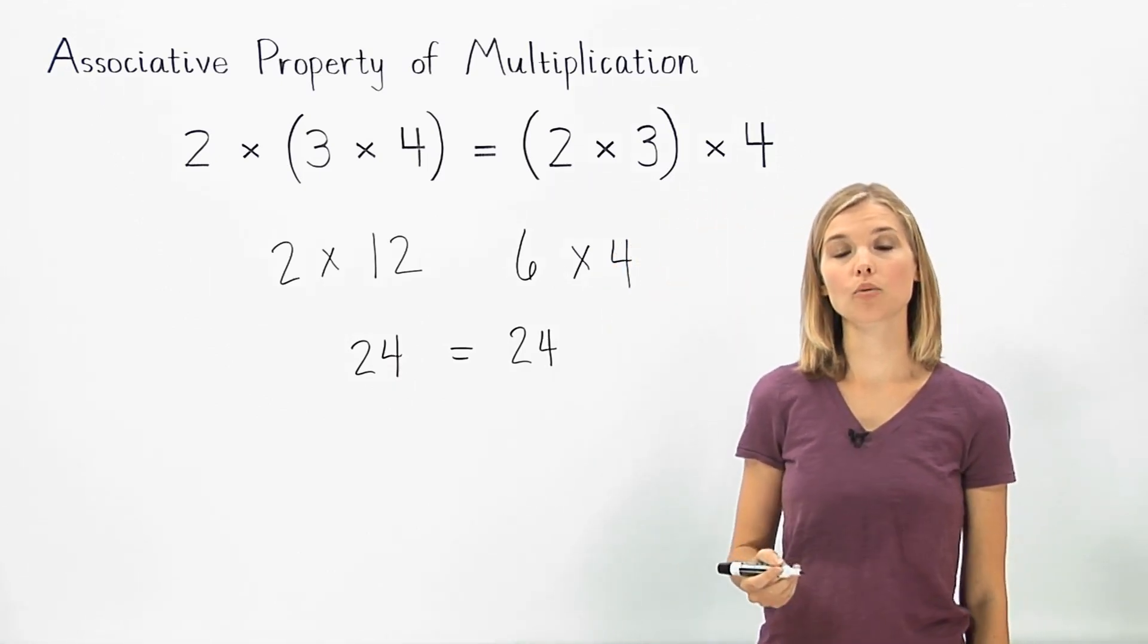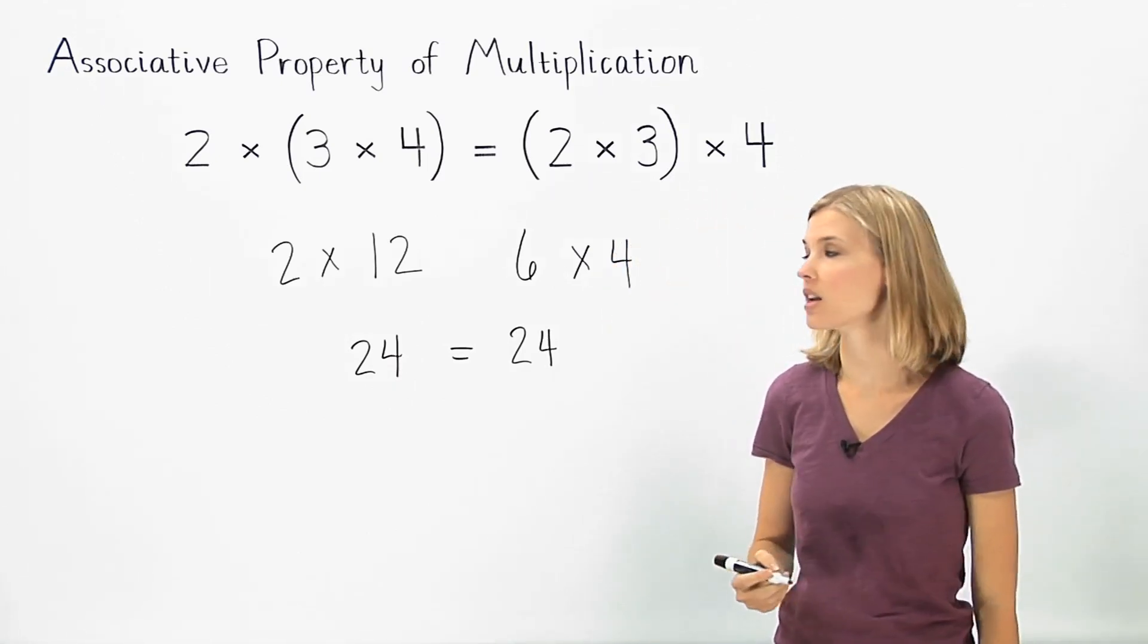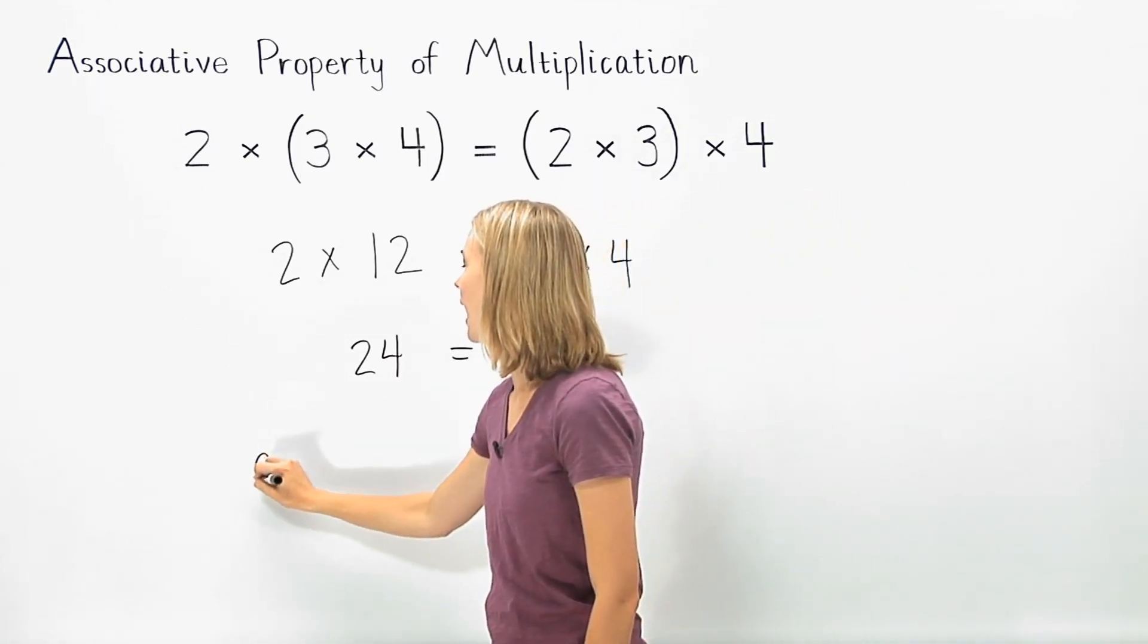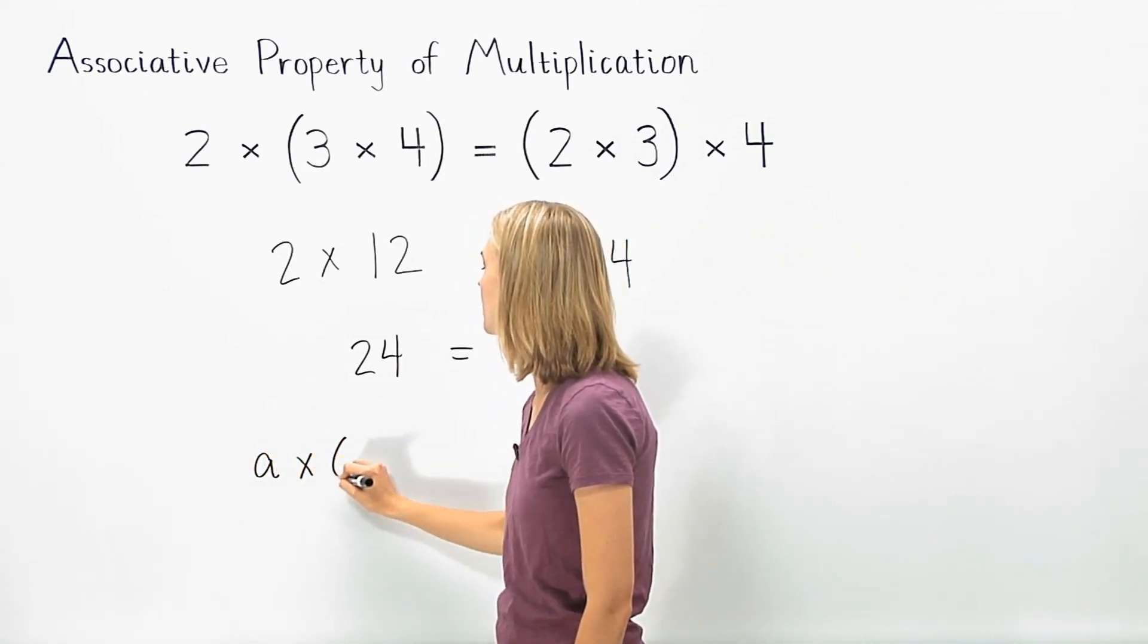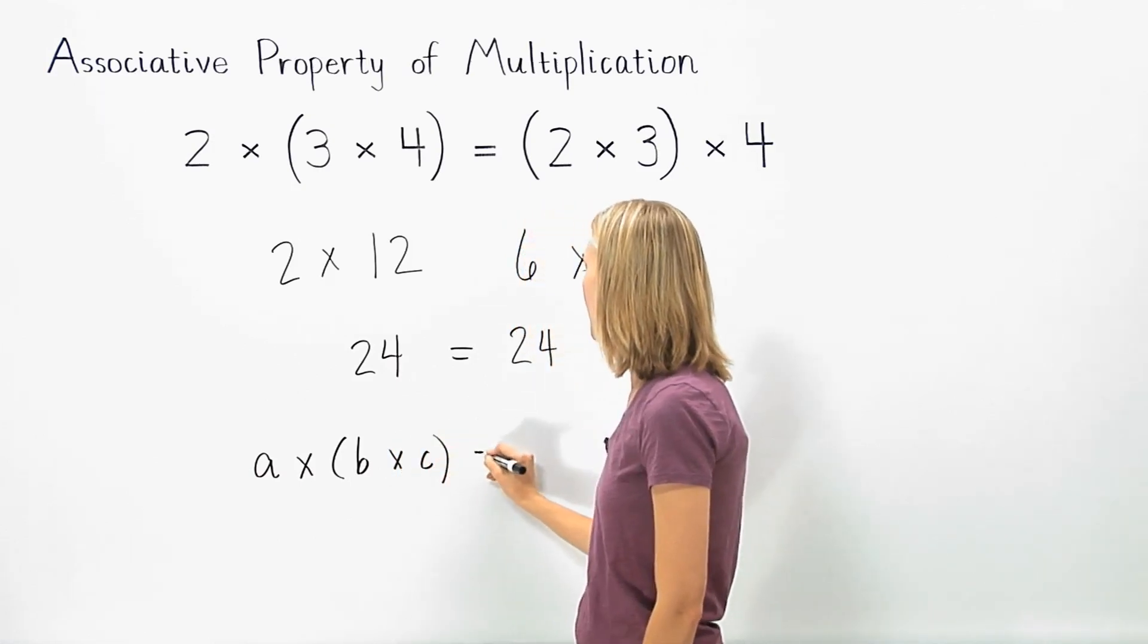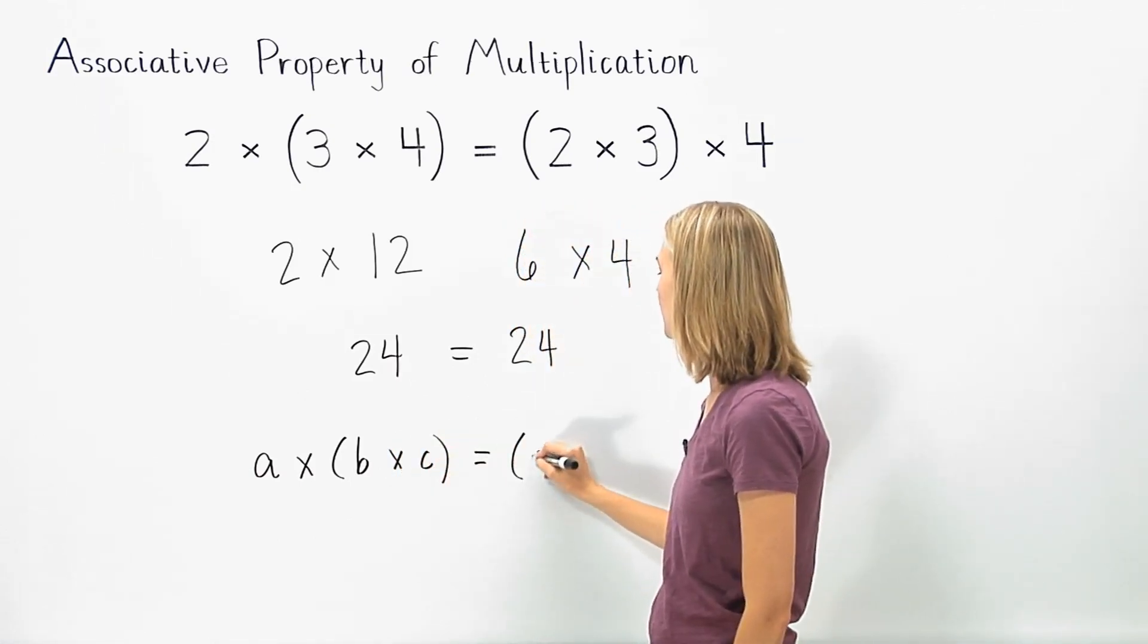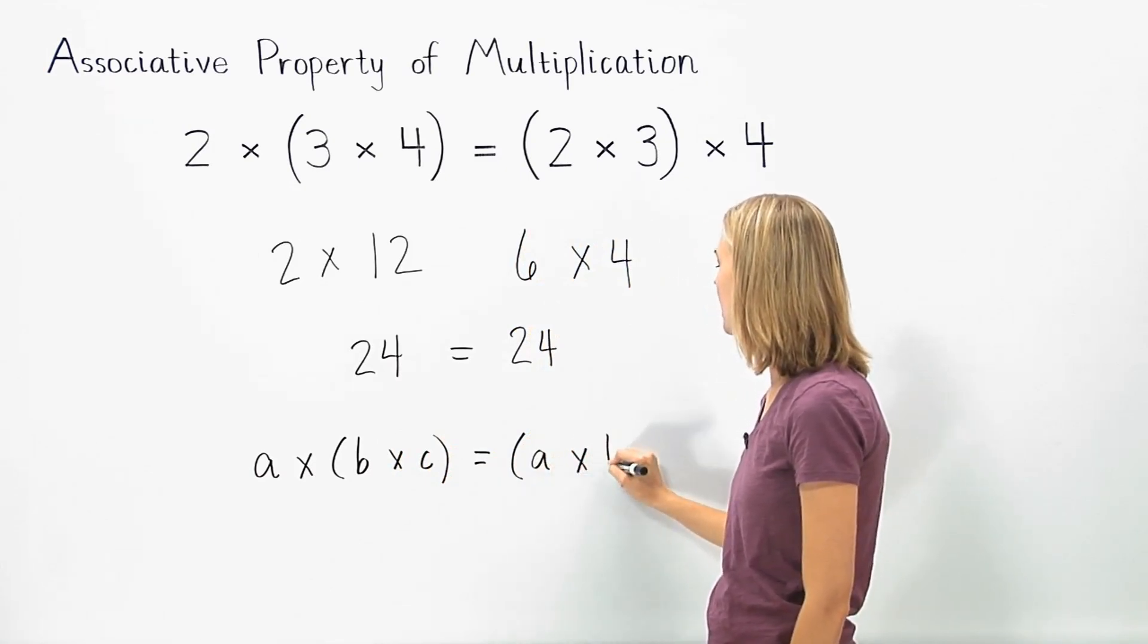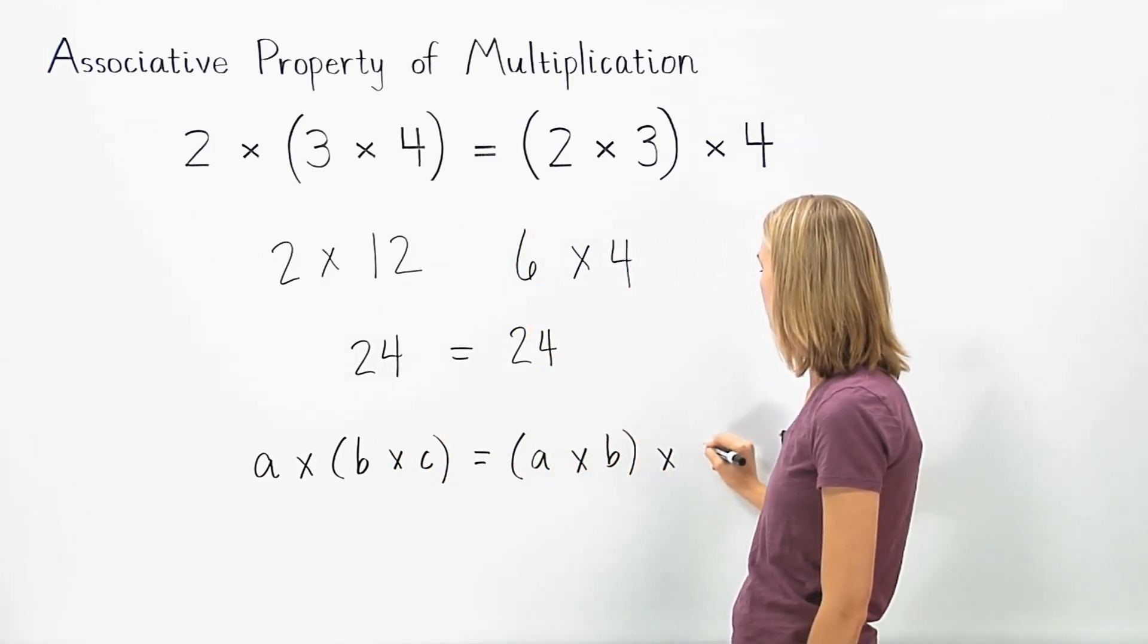In general terms, the associative property of multiplication can be written as A times (B times C) equals (A times B) times C,